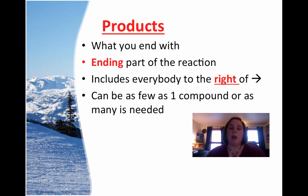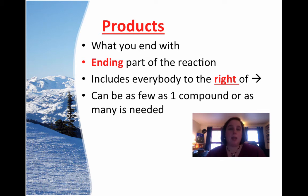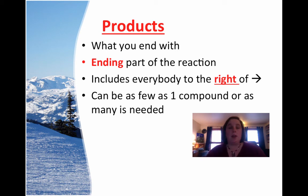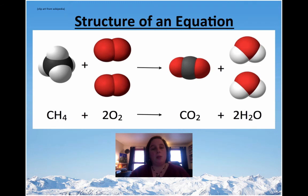The products are what you end with — the ending part of the reaction, the conclusion. It includes everybody to the right of the arrow. It can be as few as one tiny compound or as many as needed — you could take a huge compound and break it into five or six different parts. If you're on the right-hand side, you're considered a product.